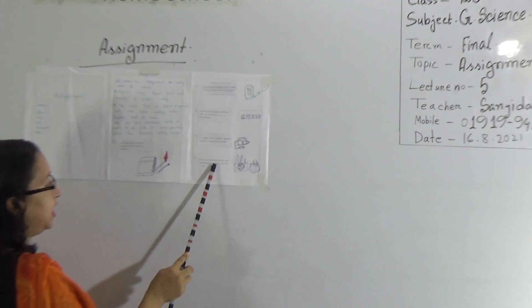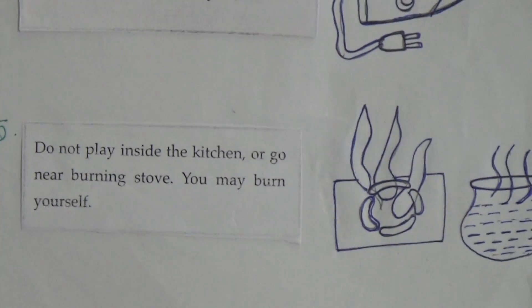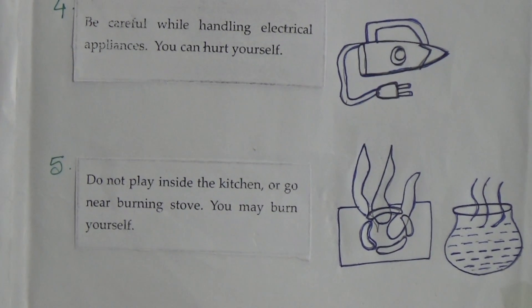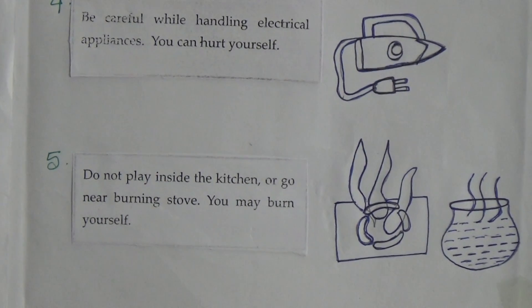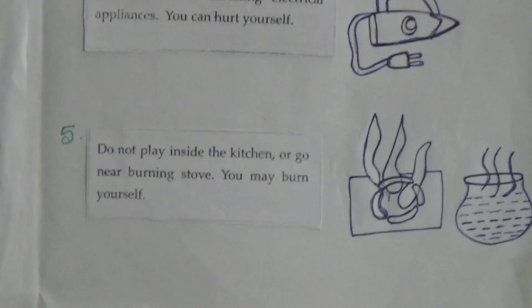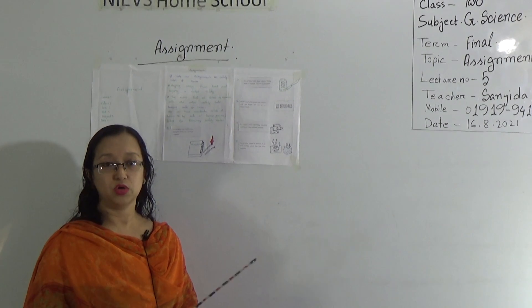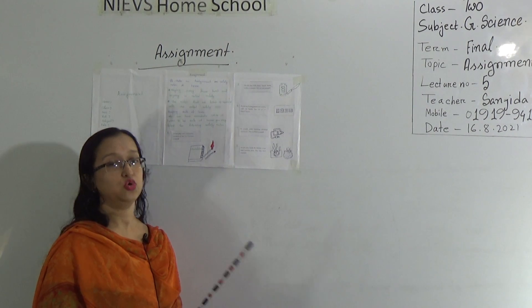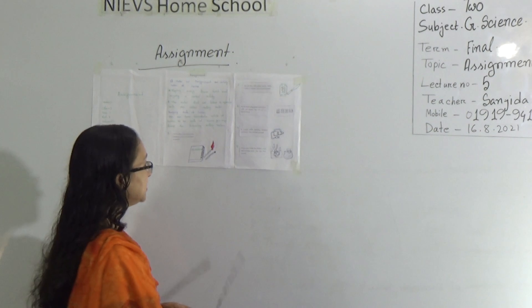Number five: do not play inside the kitchen or go near a burning stove — you may burn yourself. Please avoid the burning stove and always try to avoid the kitchen for playing, because in the kitchen there are very sharp objects used for cutting vegetables or meat, there are hot things like curry or hot water, and there is also a fire stove. Try to avoid playing in the kitchen.